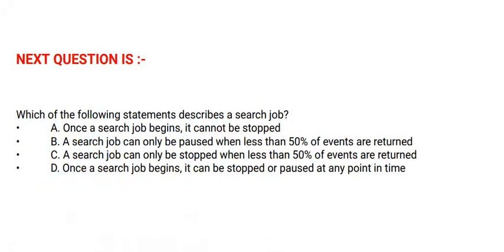Next question: which of the following statements describes a search job? Option A: Once a search job begins, it cannot be stopped. Option B: A search job can only be paused when less than 50% of events are returned. Option D: Once a search job begins, it can be stopped or paused at any point in time. The correct option is option D.